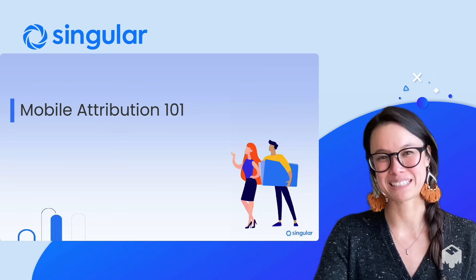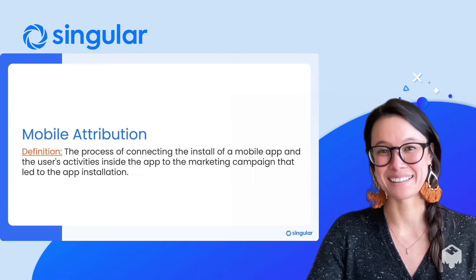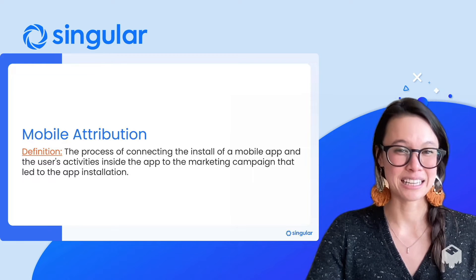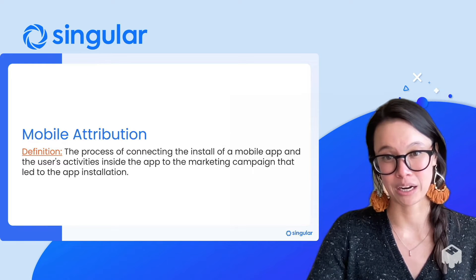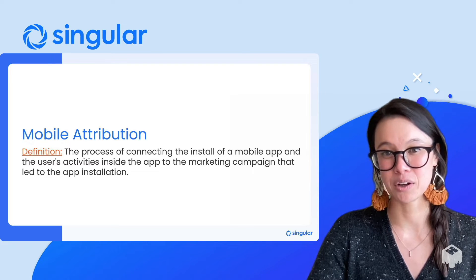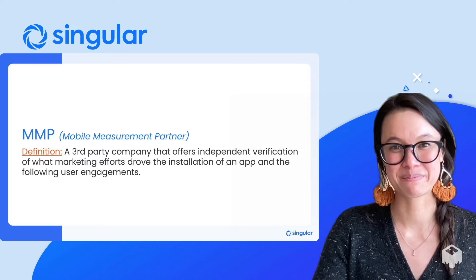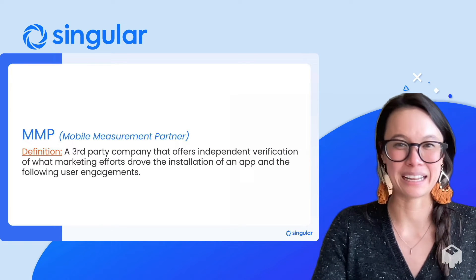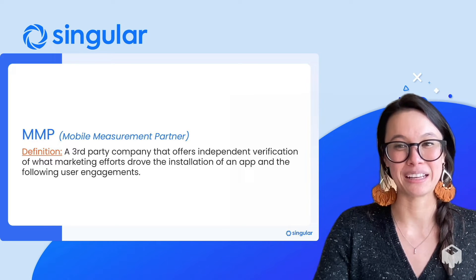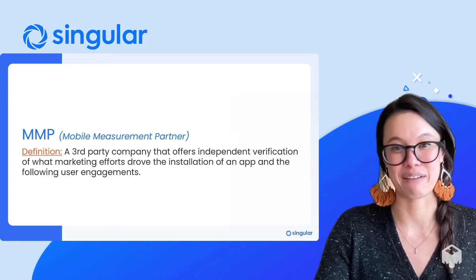Let's start by diving into the basics of mobile attribution. What is mobile attribution? Mobile attribution enables marketers to connect their marketing efforts to different engagements and events, like an app install or an in-app purchase. And what's an MMP? In short, an MMP, or a Mobile Measurement Partner, is a third-party company that performs unbiased mobile attribution on behalf of a marketer.